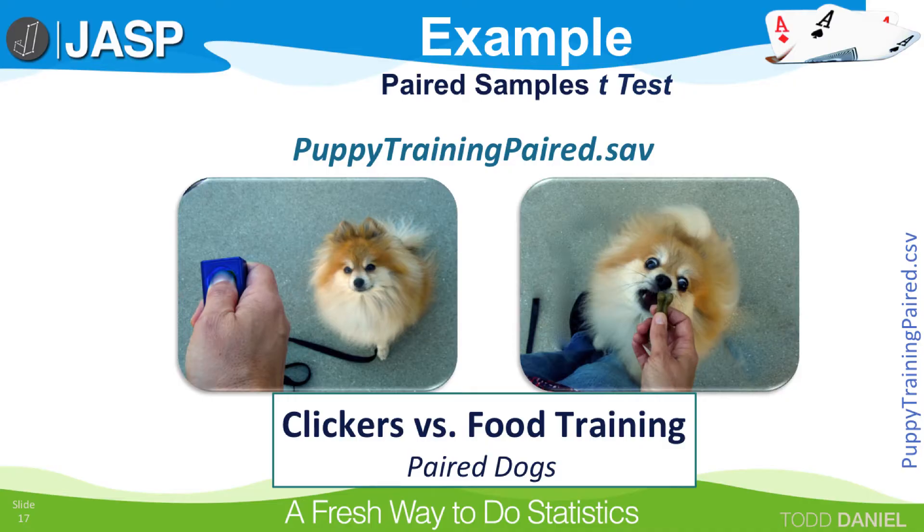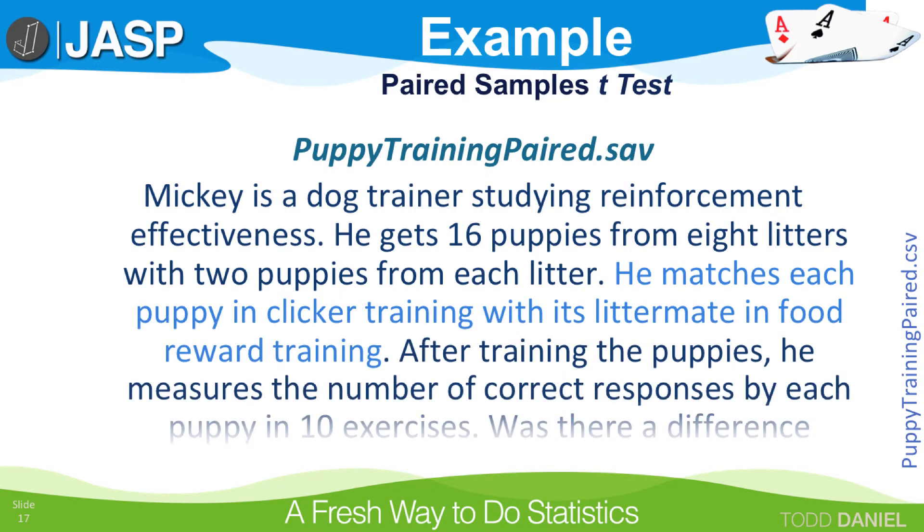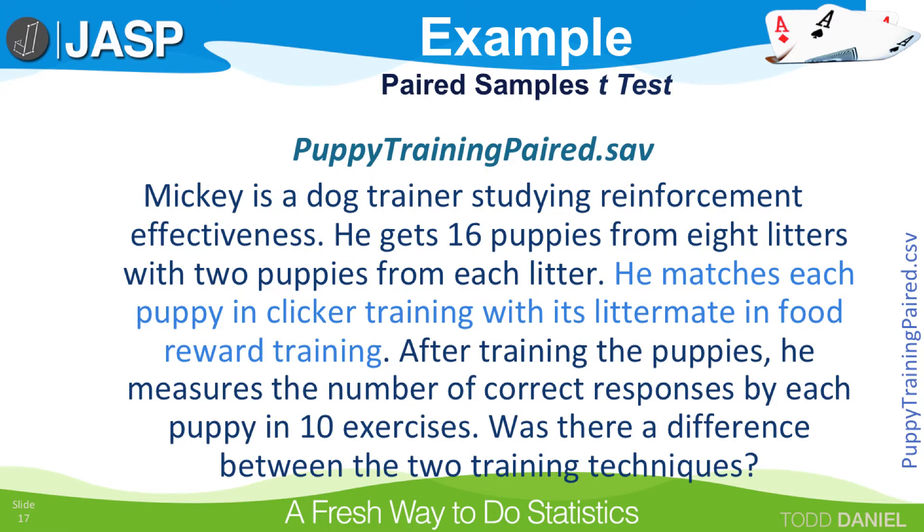Because this is a paired samples t-test, the researcher is going to use matched pairs of dogs in each group. Mickey is a dog trainer, studying reinforcement effectiveness. He gets 16 puppies from eight litters, with two puppies from each litter. He matches each puppy in clicker training with its litter mate in food reward training.